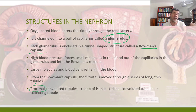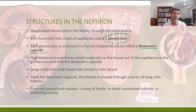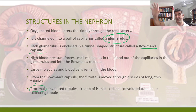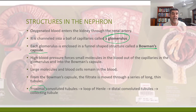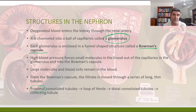Some tubules are very near the Bowman's capsule — those are the proximal ones. Then we have a structure called the loop of Henle, followed by the distal convoluted tubule — distal meaning further away — and then that leads into a collecting tube. The collecting tube comes into the pelvis, the pelvic region of the kidney, and then goes through the ureter into the bladder to be stored for later expulsion.